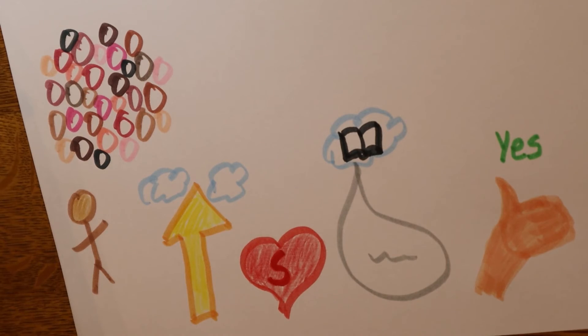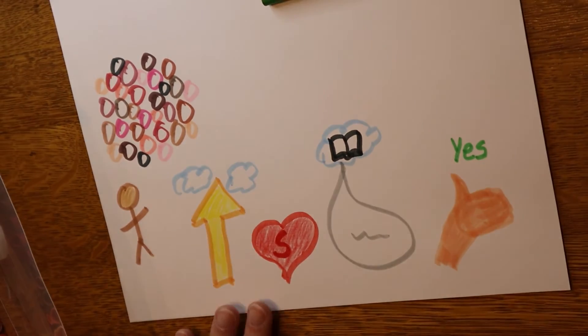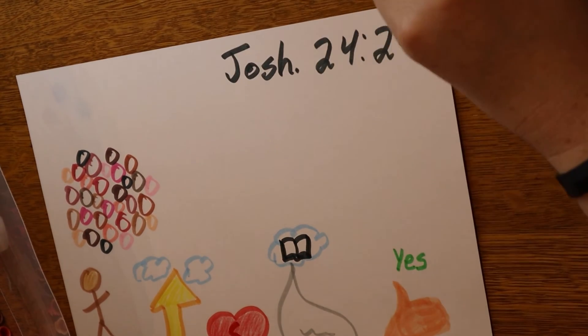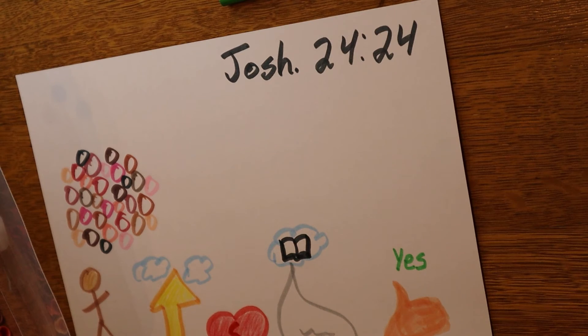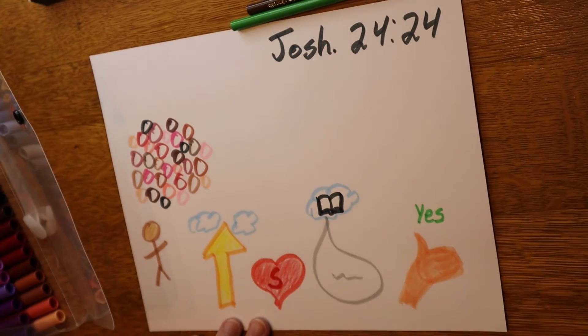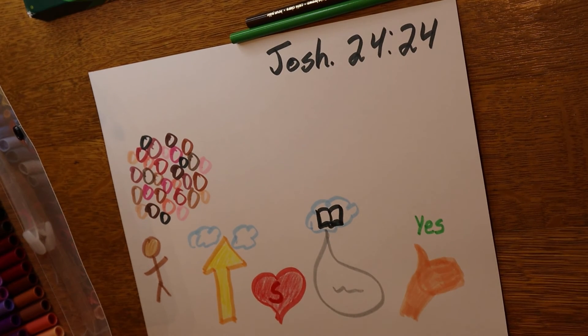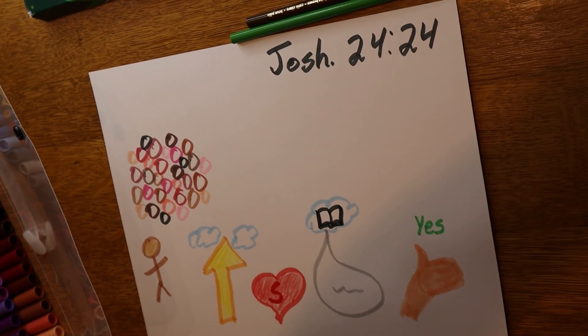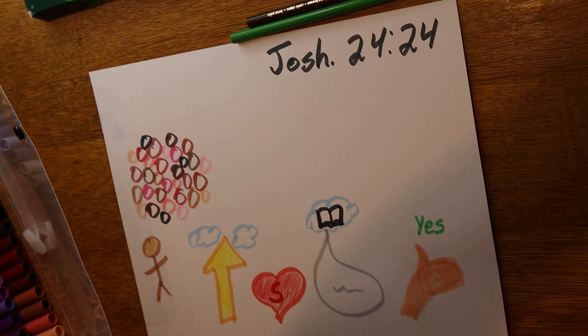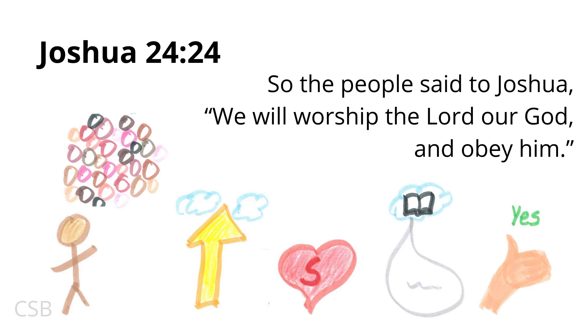Now you can copy out the verse in this white place that we left on your picture. Just write out the verse right there. Let's say it one more time. Joshua 24:24. 'So the people said to Joshua, we will worship the Lord our God and obey Him.' Joshua 24:24.